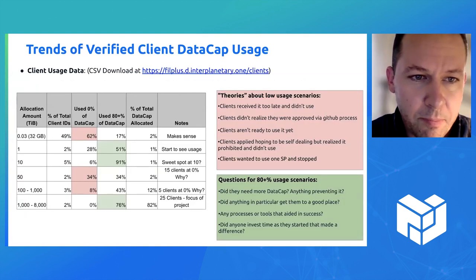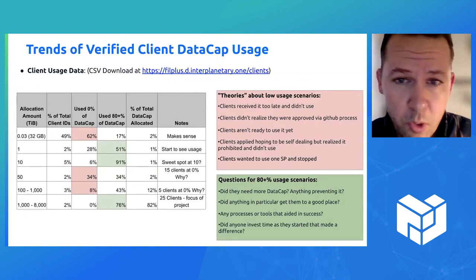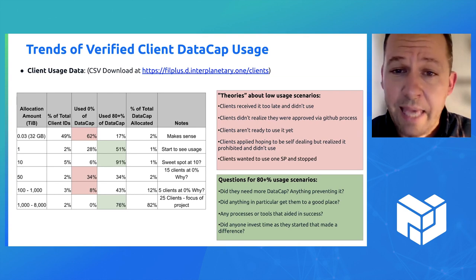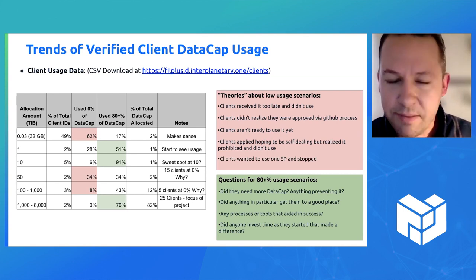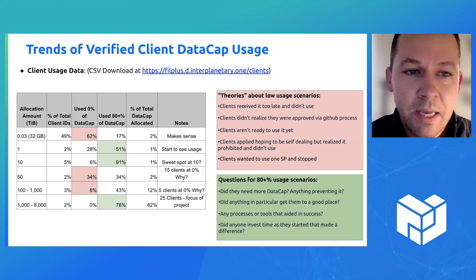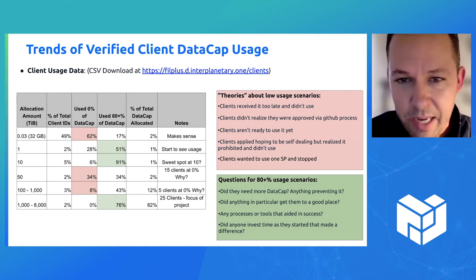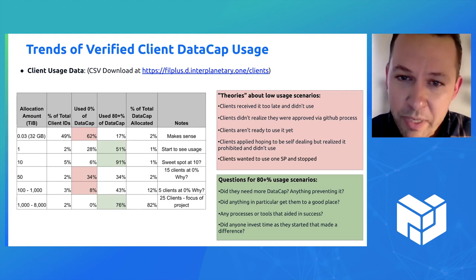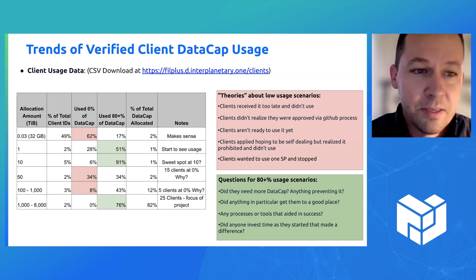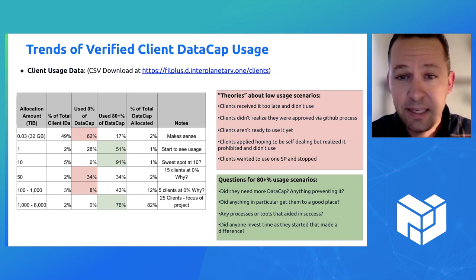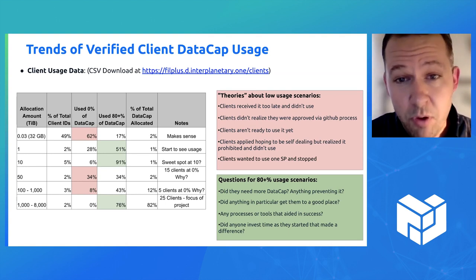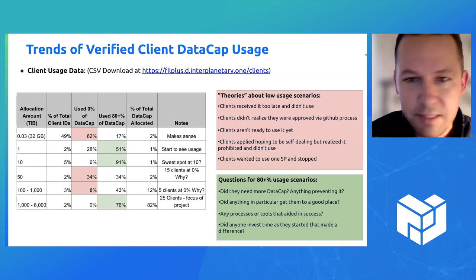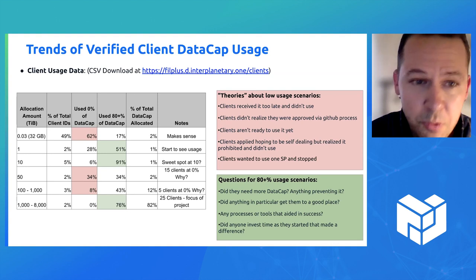Just pulling down the data from the PhilPlus site, I'll talk you quickly through this chart. I wanted to look at the different allocation amounts and who was using it and who wasn't using any of their data. The first category is that 32 gigabytes — if you went in and said, I want to get some DataCap and play around. Well, that's about half of the client IDs in the database, and 62% of those haven't used any of it. So people have signed up, received it, and haven't used it, which kind of makes sense — maybe they just decided not to.